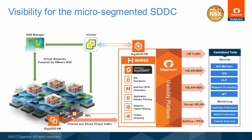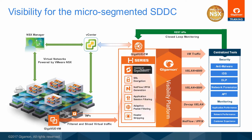VMware's NSX reproduces the entire network model in software, enabling network topologies to be created and provisioned in seconds. It enables a library of logical networking elements and services such as logical switches, routers, firewalls, load balancers, VPN, and workload security. Users can create isolated virtual networks through custom combinations of these capabilities. Working closely together, Gigamon and VMware engineered custom features that permit automatic provisioning of traffic visibility as part of the network topology provisioning facilitated through NSX. Leveraging the Gigamon API and the dynamic service insertion features within NSX, you can spin up or tear down new topologies through NSX Manager. This means underlayer or virtual traffic can be optimized with features like filtering on a specific tenant's traffic, VXLAN header stripping, or generating NetFlow for selected traffic for a particular tenant as part of automated provisioning.